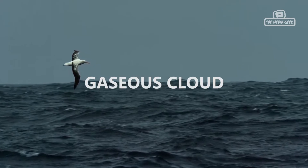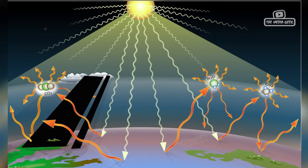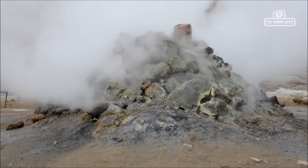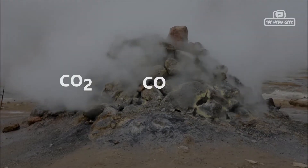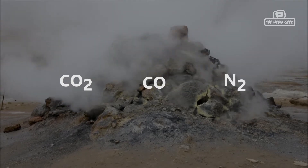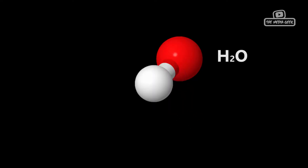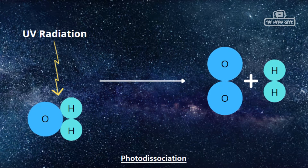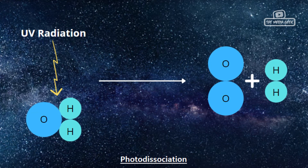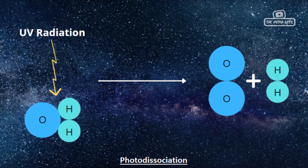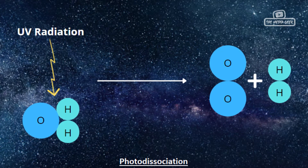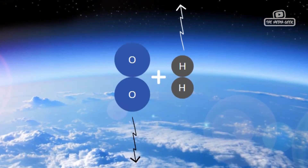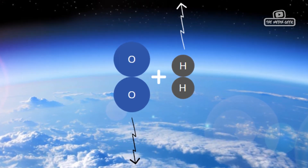Gaseous Cloud. The gases released from the interior or core changed the composition of the atmosphere with a rich gaseous mixture of carbon dioxide, carbon monoxide, and nitrogen. Alongside, there started happening the photo dissociation of water — the breaking of water molecules due to the striking of light — which resulted in the formation of hydrogen and oxygen molecules in the upper atmosphere. Eventually, with the passage of time, hydrogen escaped and oxygen remained in the atmosphere.